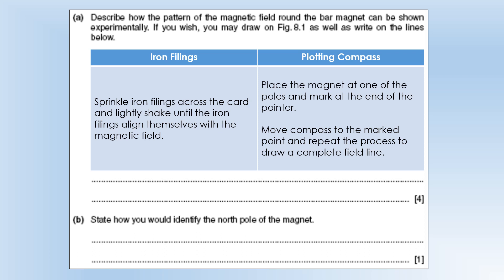You can also use a plotting compass to actually mark out the path of one field line by essentially just marking where the north point of your compass points and then moving your compass around to complete a field line. To identify the north pole of a magnet, you could find out which end attracts a south pole or which end repels a known north pole. Or you can look for the end the north pole of a compass points away from. Because remember compasses point from north to south.